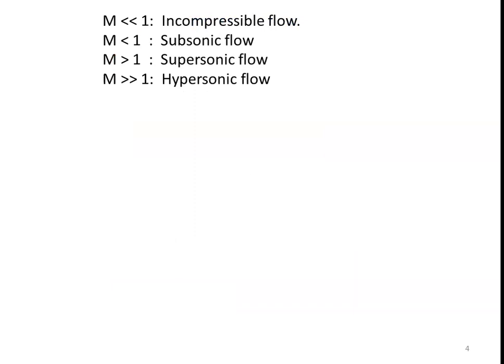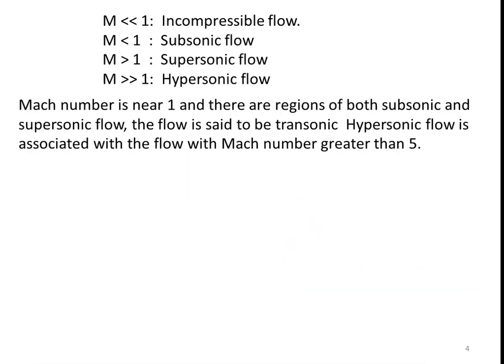Based on the Mach number, we classify flow as: incompressible flow (M much less than 1), subsonic flow (M less than 1), supersonic flow (M greater than 1), and hypersonic flow (M much greater than 1). When M equals 1, the flow is called sonic flow. There is also a transonic flow region where the Mach number fluctuates between slightly less than 1 and slightly greater than 1. Hypersonic flow occurs when the Mach number is greater than 5.